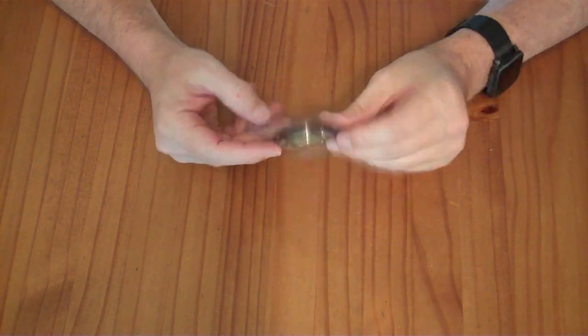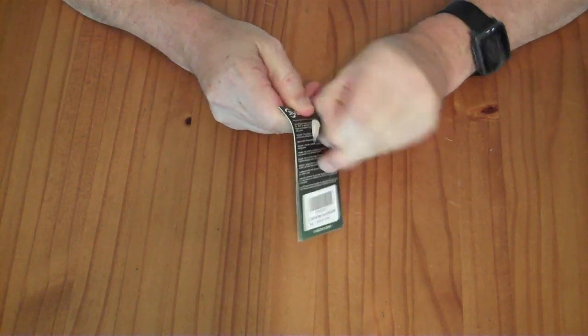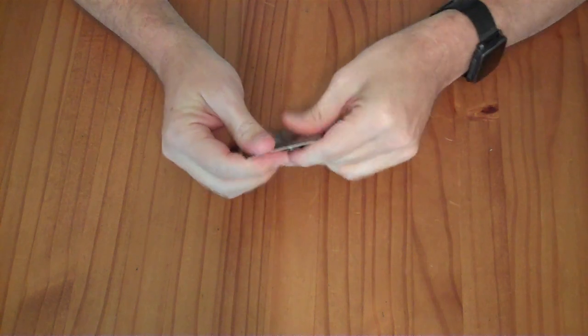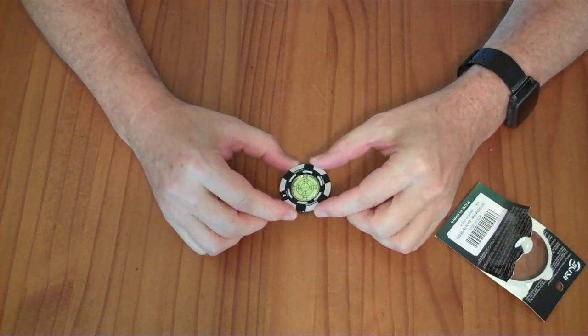I'm reviewing this golf putt green reader and really it's just a bubble level. I don't play golf. I'm not going to use this on a golf course. I'm going to use this to level my telescope tripod.